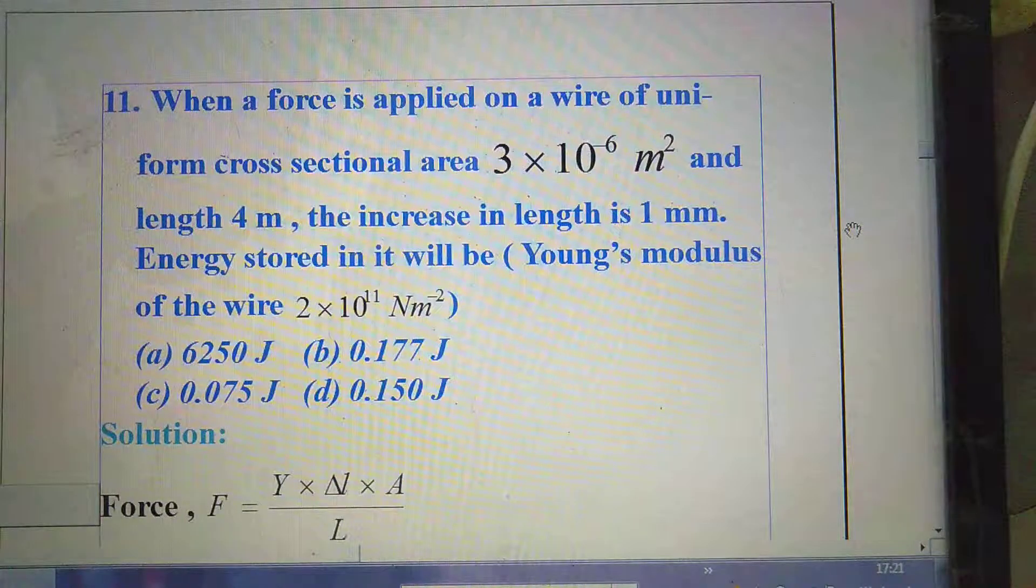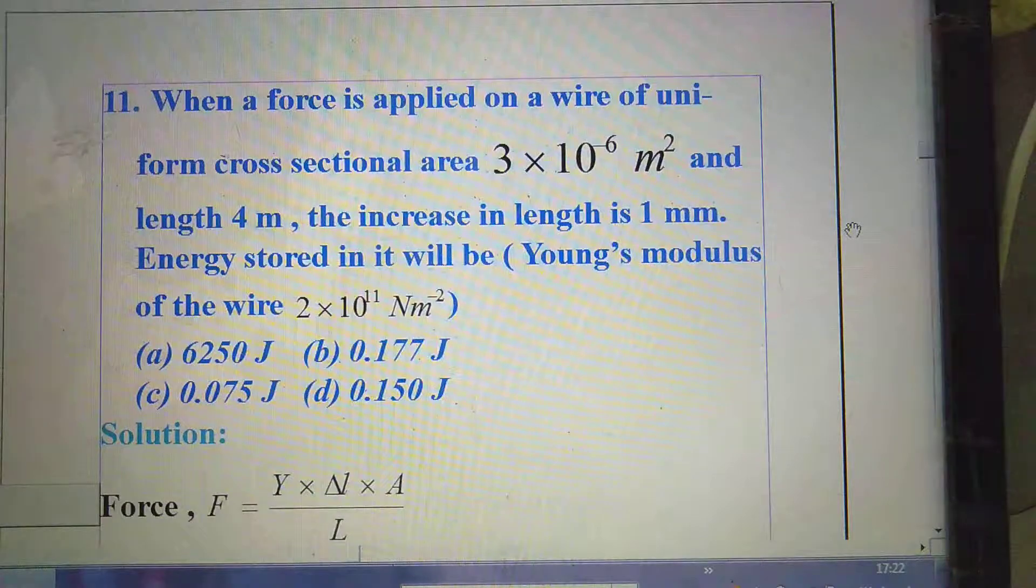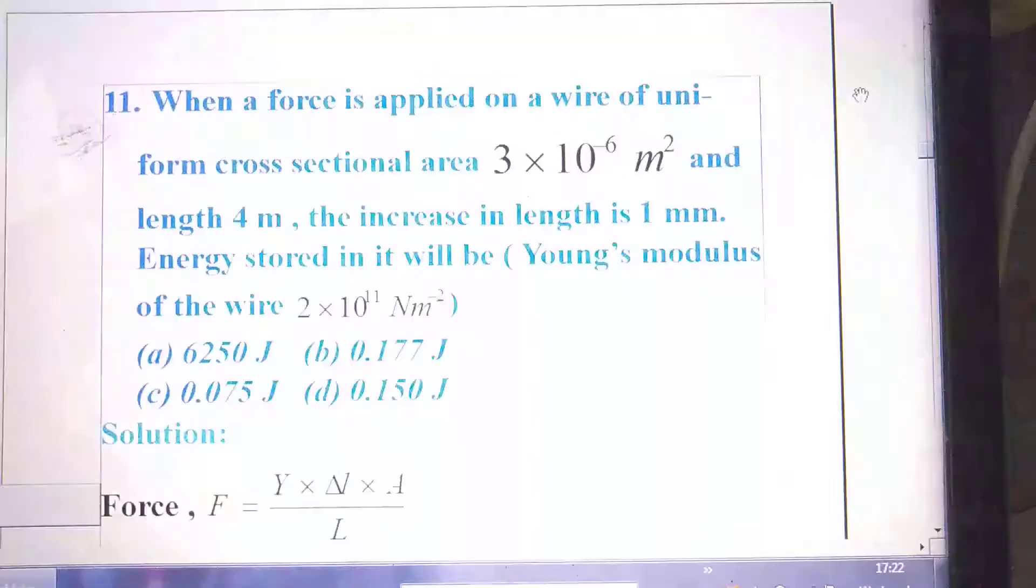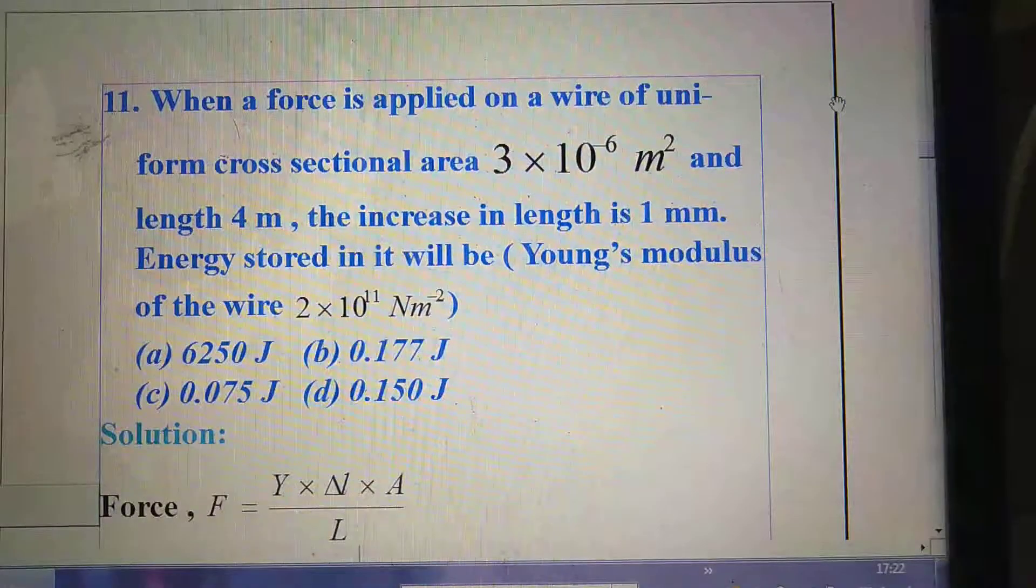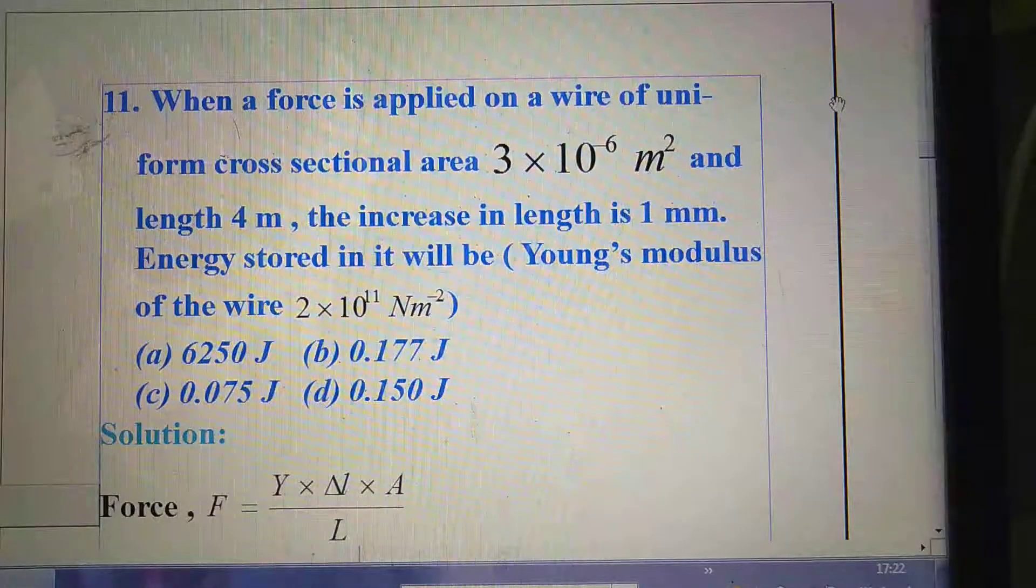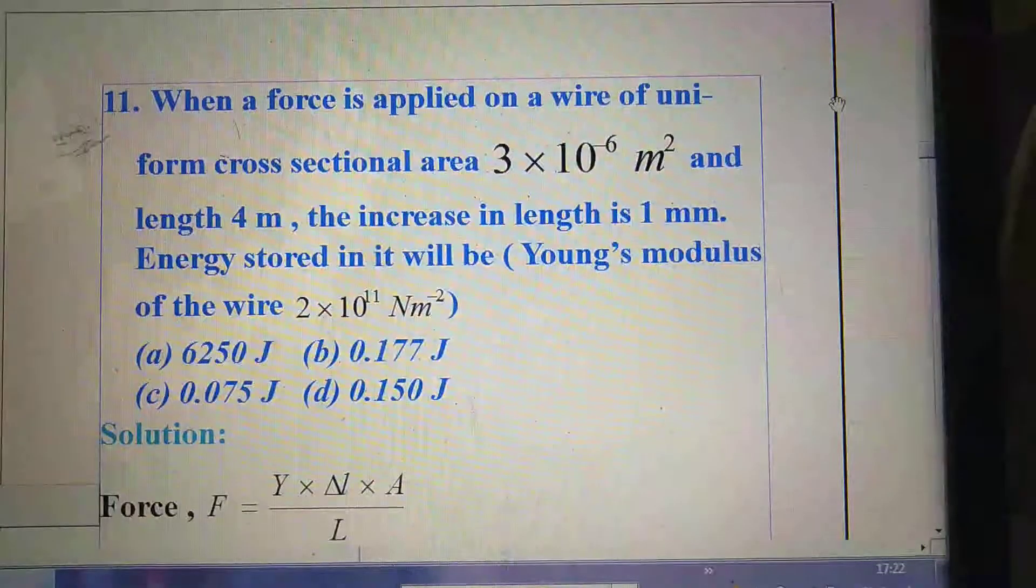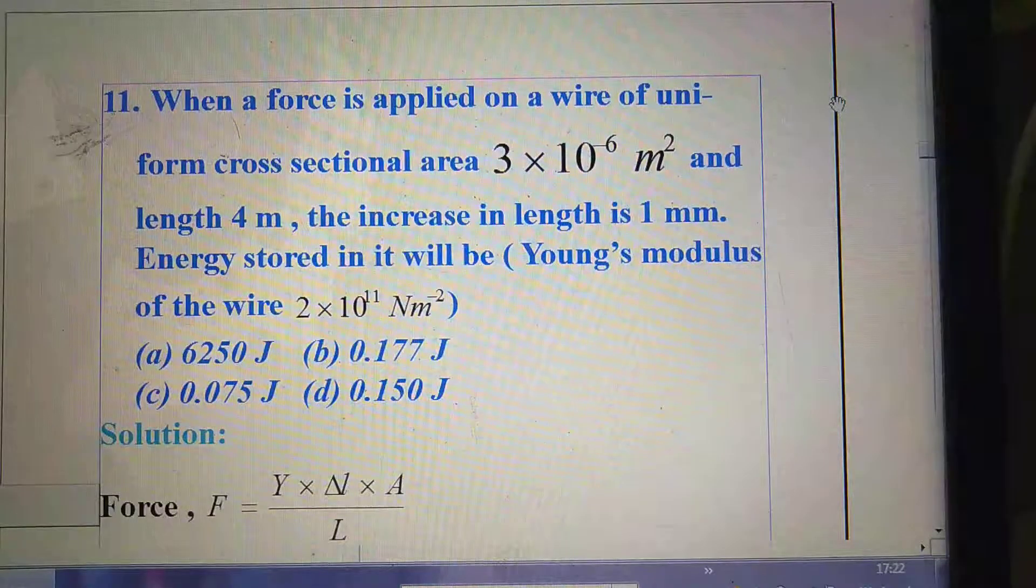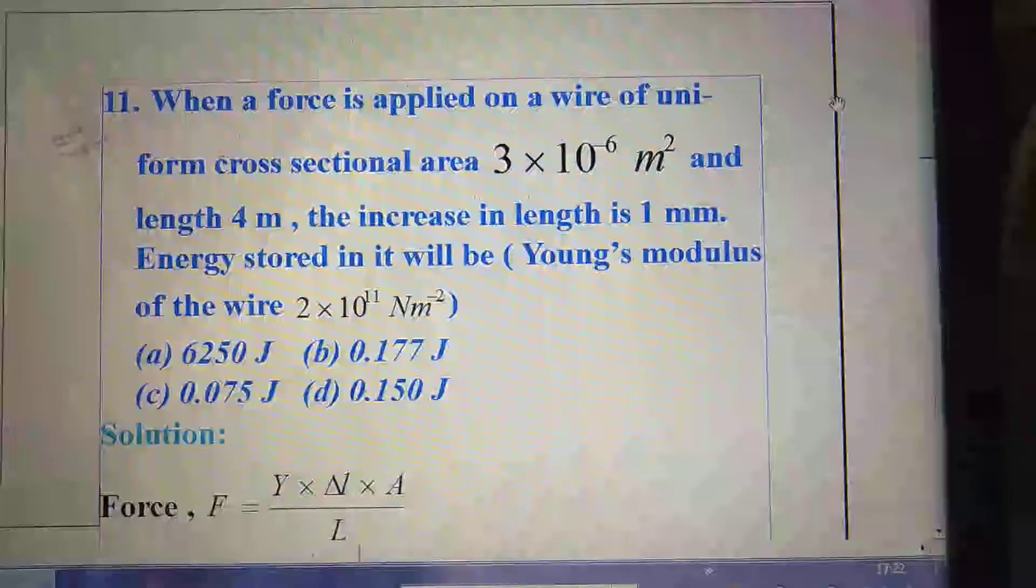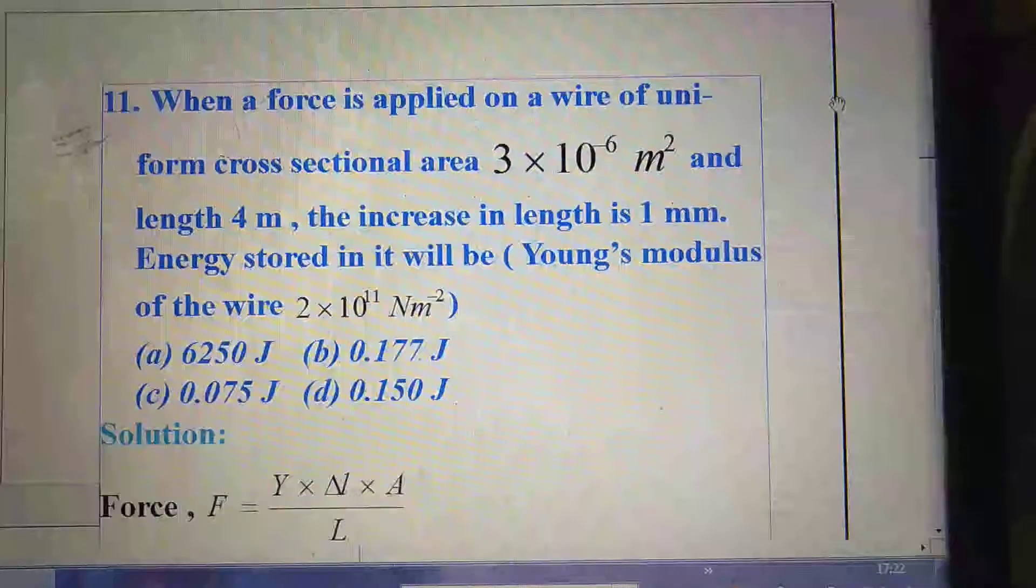First question. When a force is applied on a wire of uniform cross-sectional area 3 × 10⁻⁶ m² and length 4 meter, the increase in length is 1 millimeter. Energy stored in it will be, given Young's modulus of the wire 2 × 10¹¹ N/m².